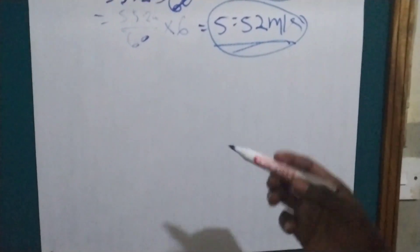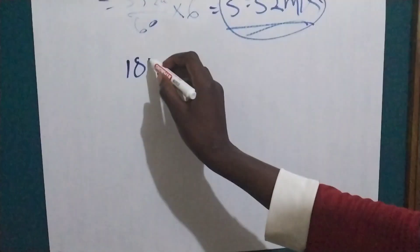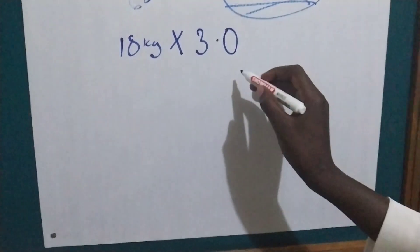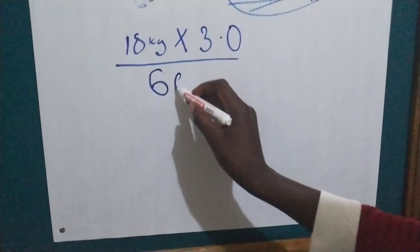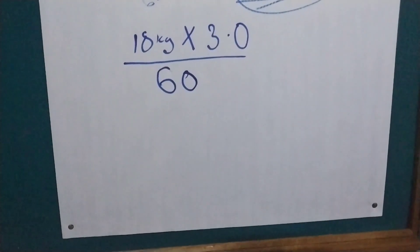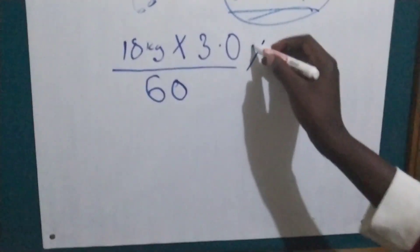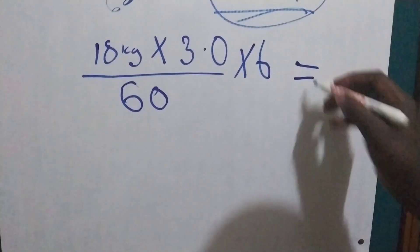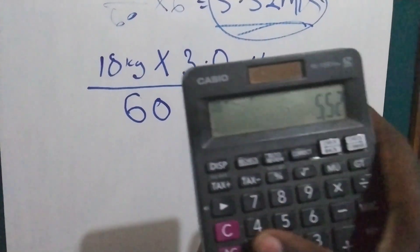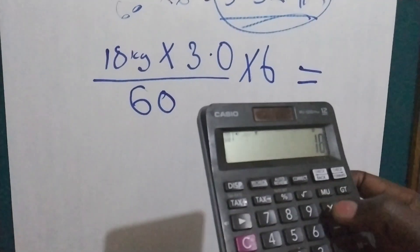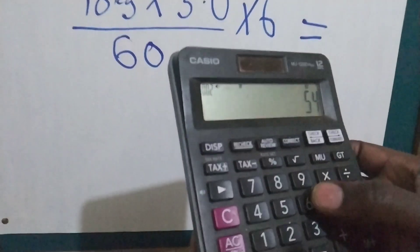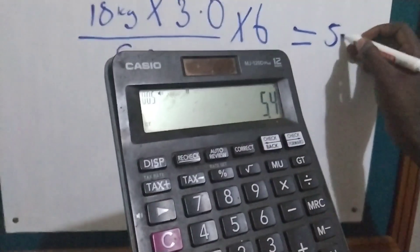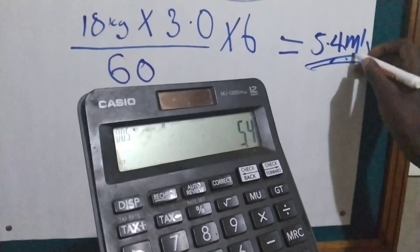So let's start with 18. So what we are going to do, we are going to put 18 kilograms times 3.0, and then we are going to divide by 60 times 6. So this is the method we are going to use. This is the second one. So what will we get here? Let's see if they will bring us the same result. 18 times 3.0 times 6 divided by 60. So you see we will get 5.4 milliliters. This one now converted directly to milliliters. So this one is more easier than the other one.